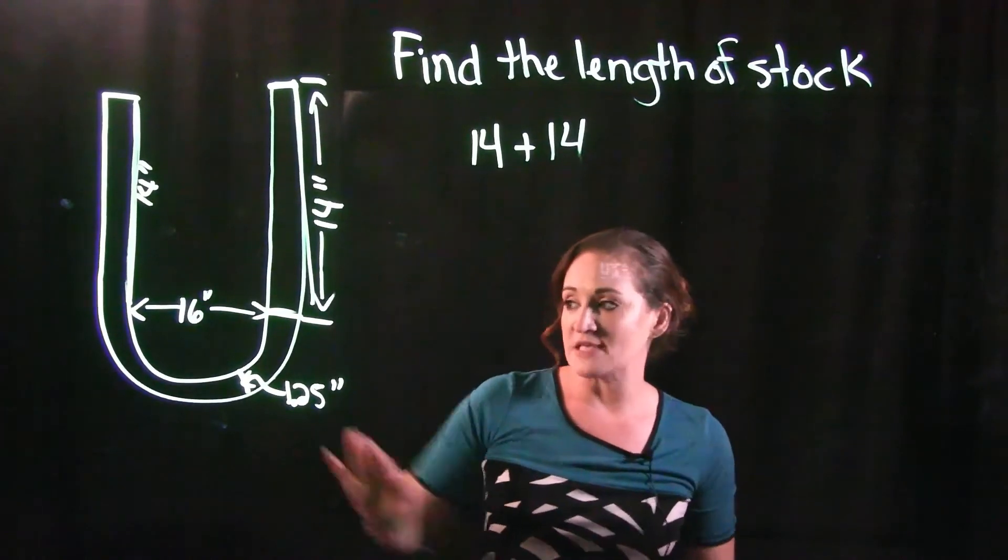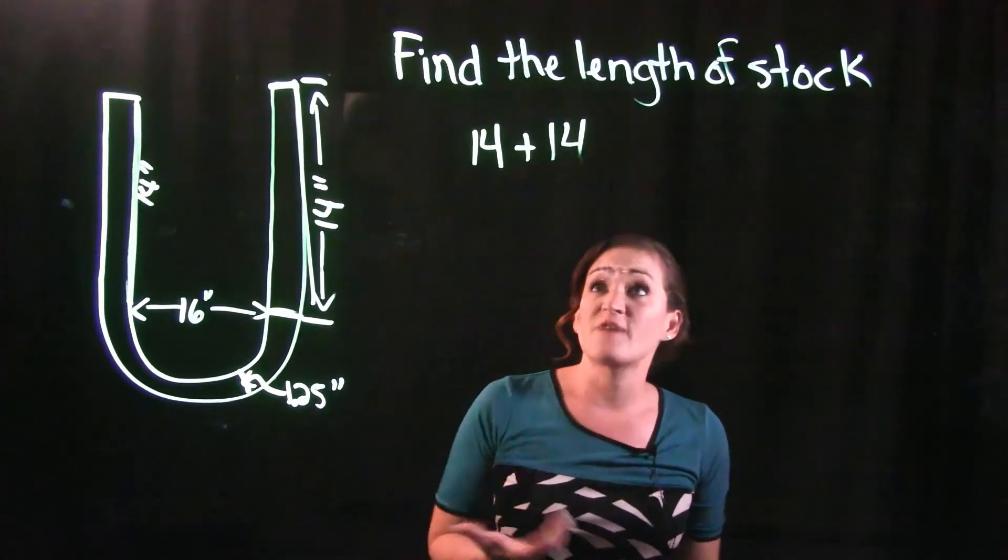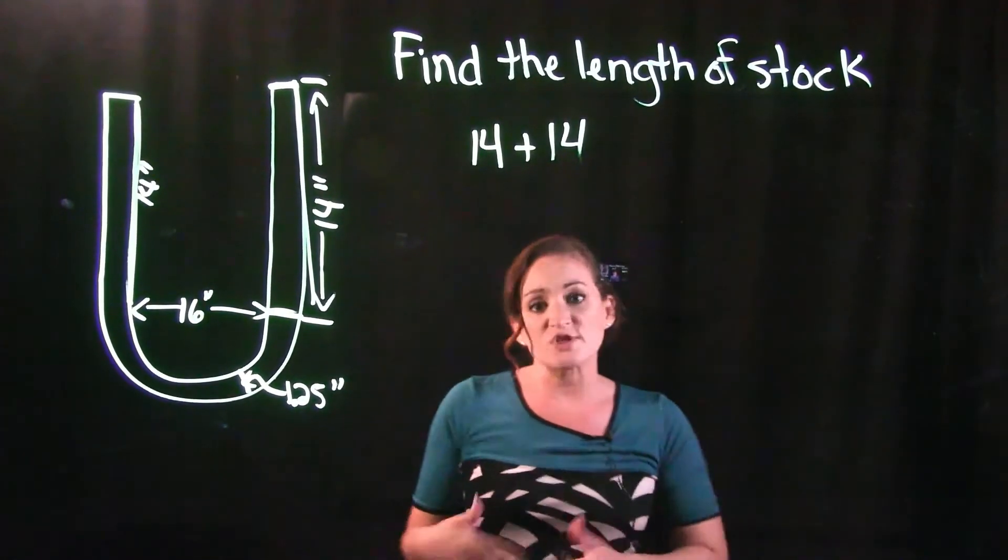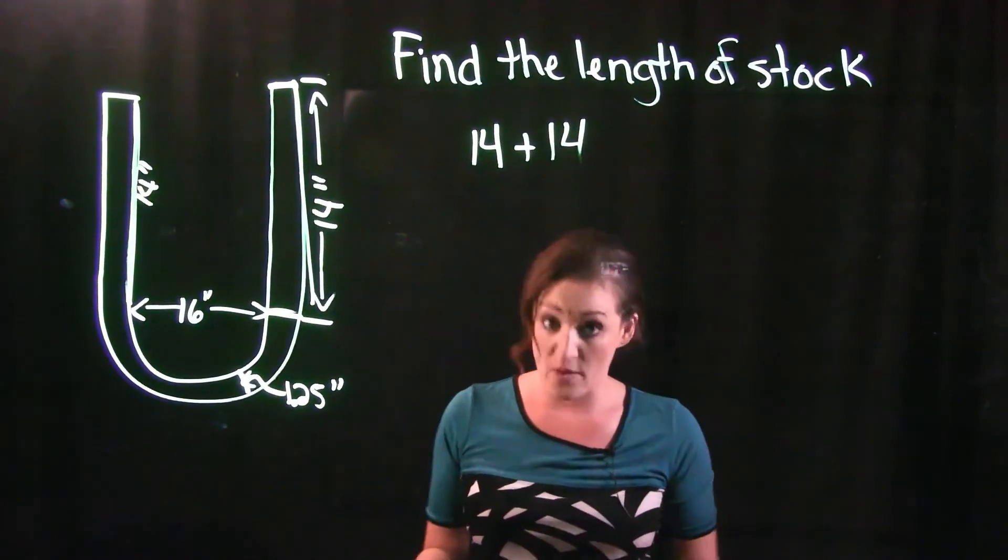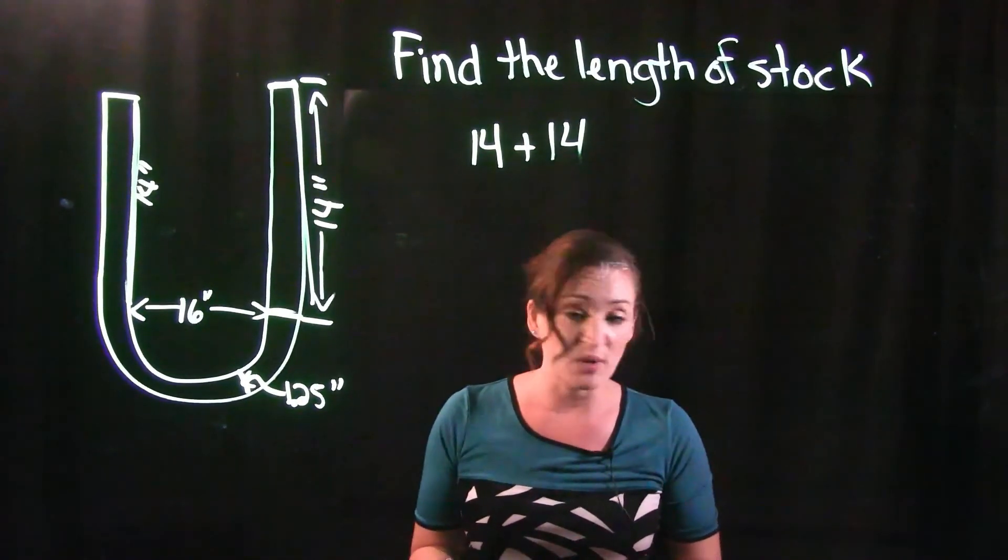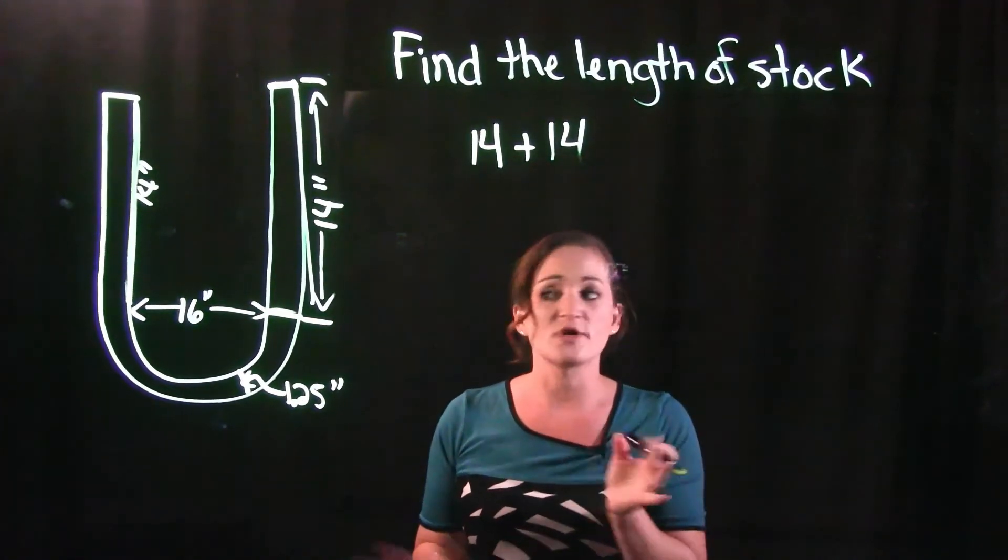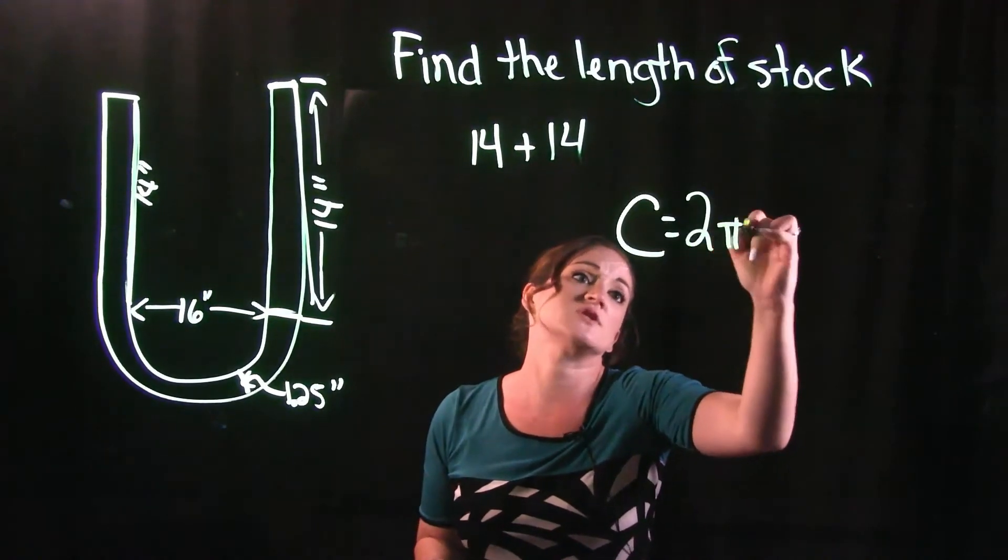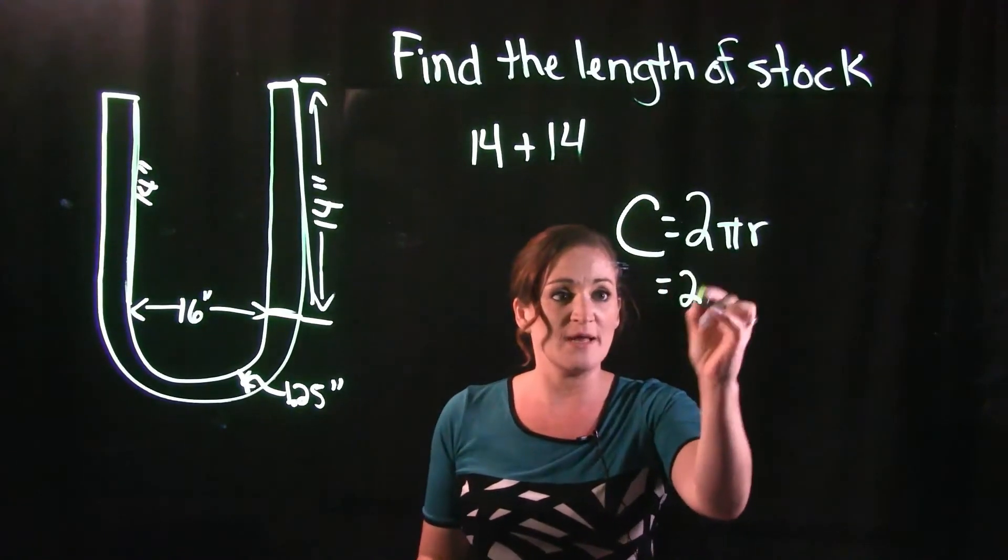When it comes to finding perimeter of anything circular, perimeter of a circle or something circular is called circumference. It's just a fancy way of saying perimeter of a circle. So we do need our formula for circumference of a circle. Circumference of a circle is equal to 2πr.